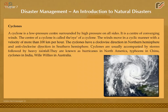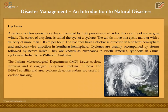Cyclones are usually accompanied by storms followed by heavy rainfall. They are known as hurricanes in North America, typhoons in China, cyclones in India, and willy-willies in Australia. The Indian Meteorological Department issues cyclone warnings and is engaged in cyclone tracking. The INSAT satellite and area cyclone detection radars are useful in cyclone tracking.